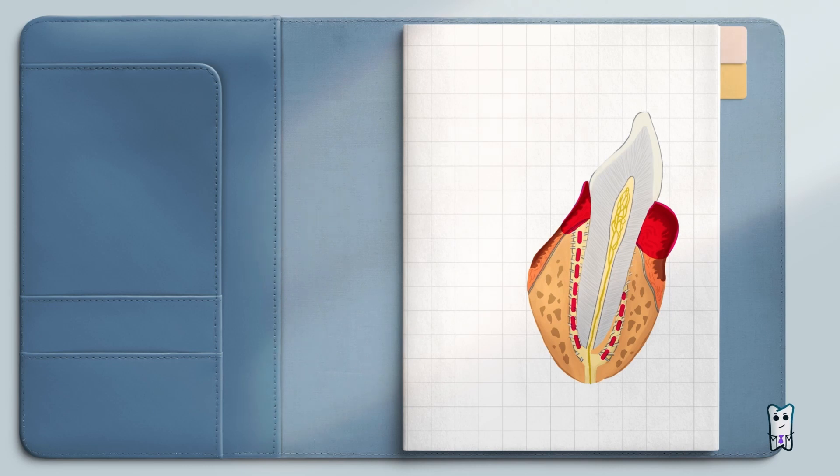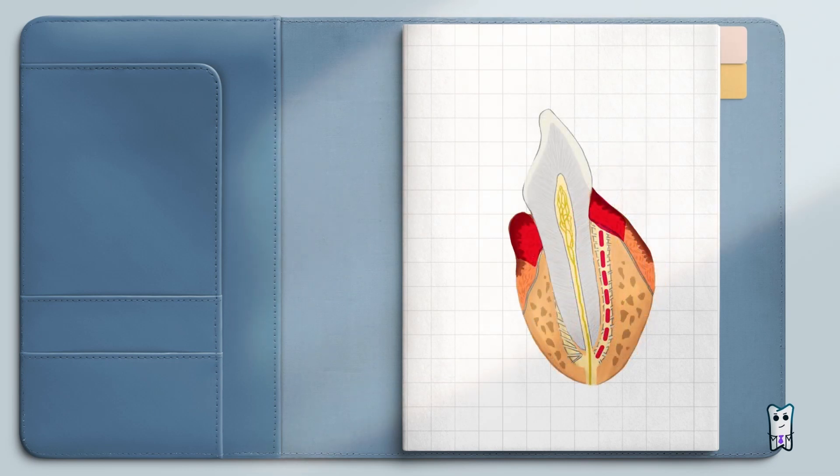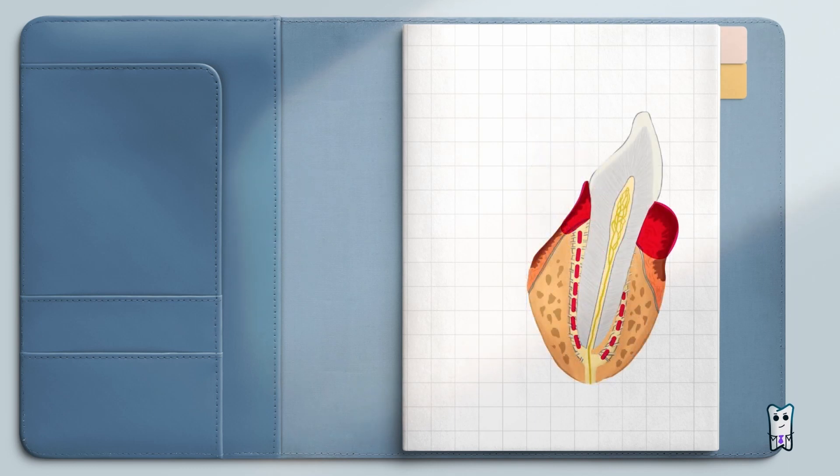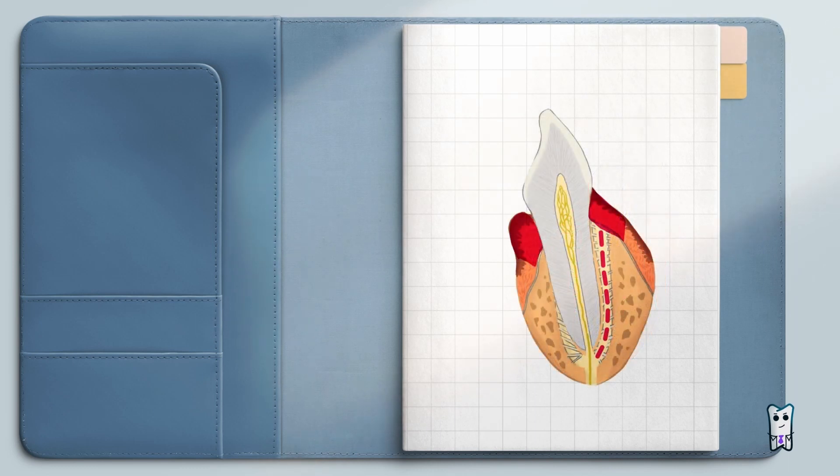Let's imagine you have not done syndesmotomy. You have already luxated the tooth and you're taking it out of the alveolus. Since the gingival dental fibers are not ruptured while removing the tooth from the alveola,